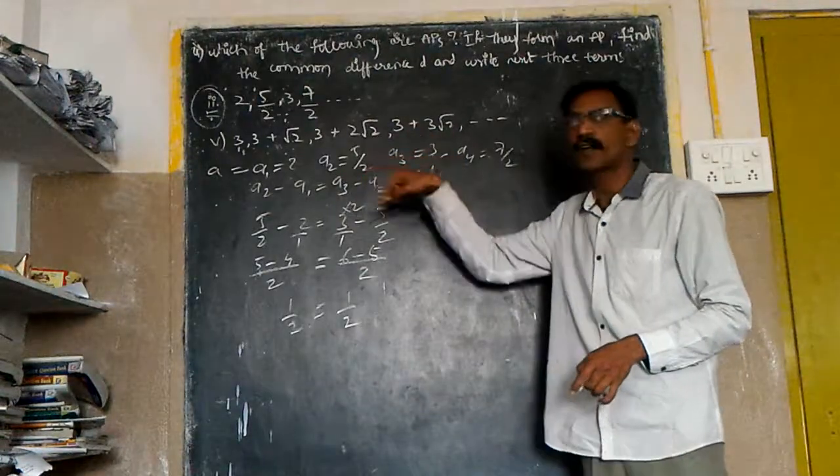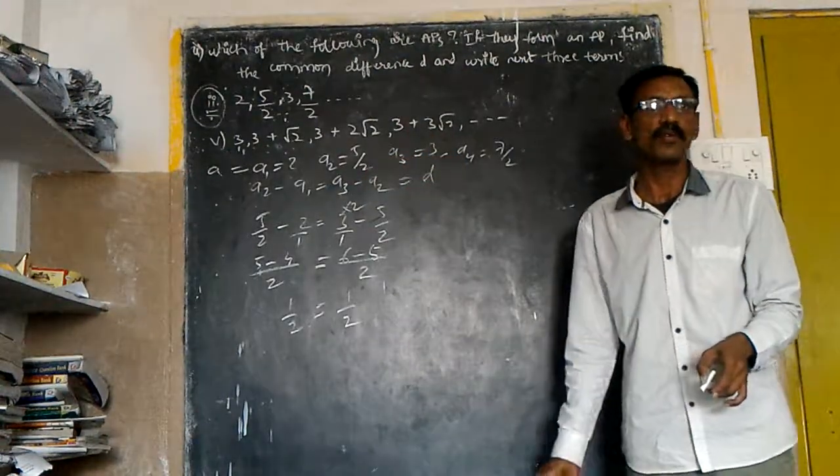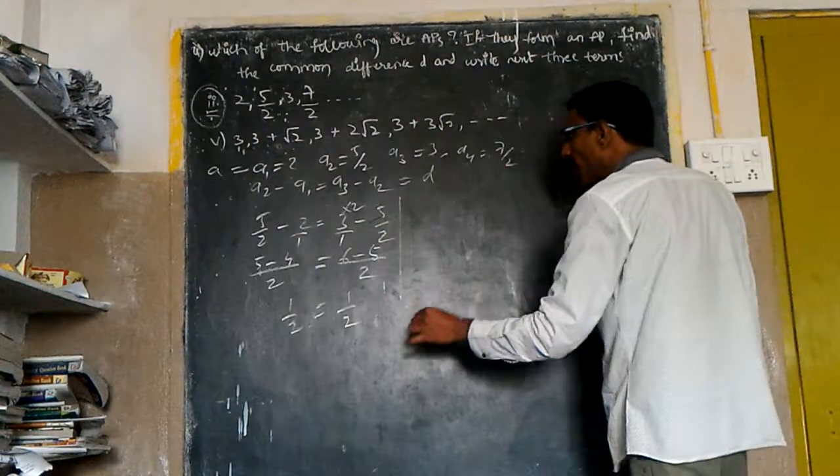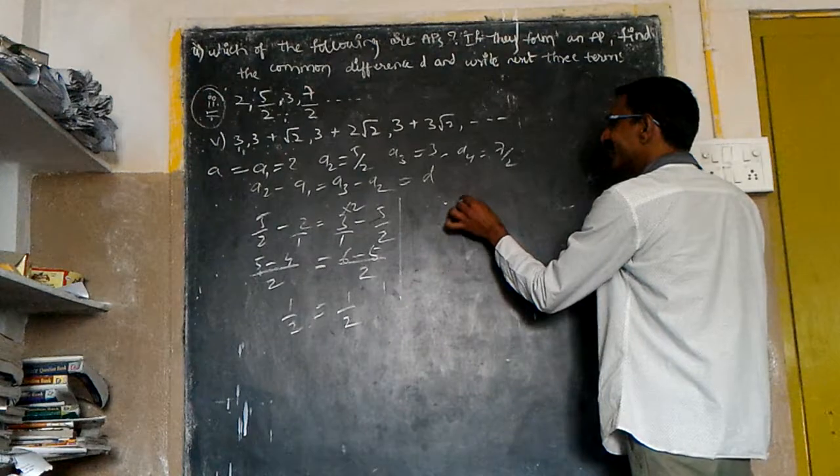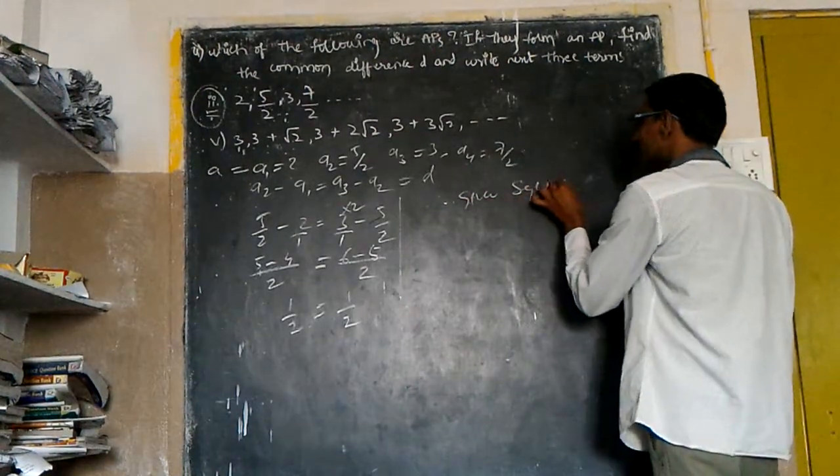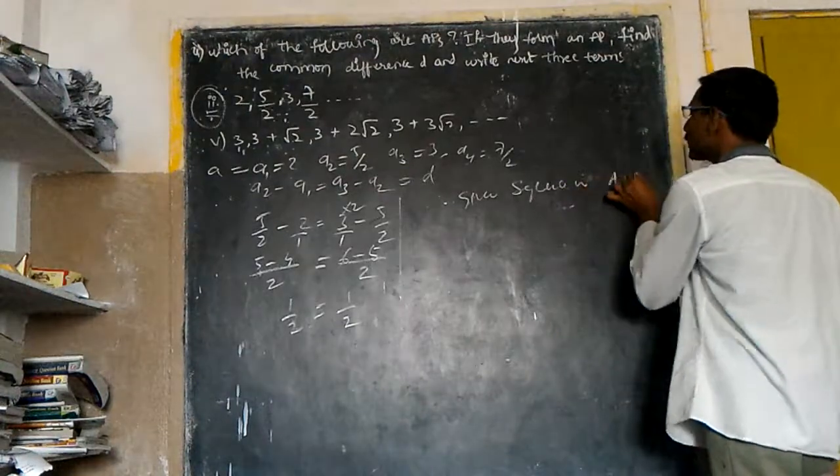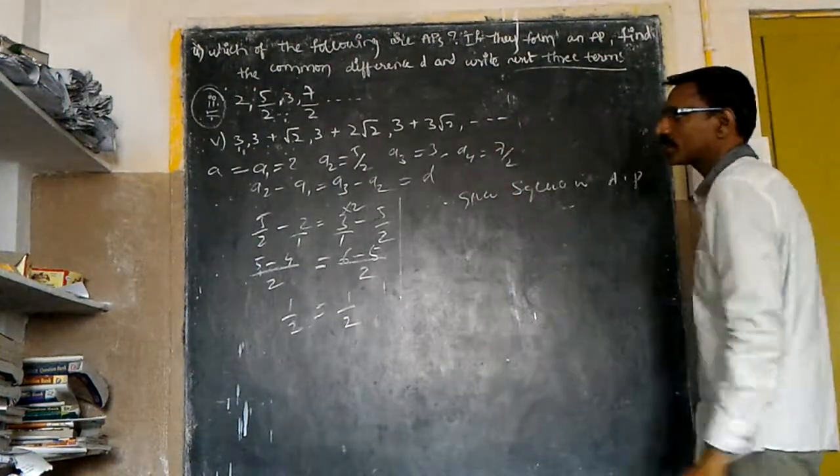After that, you have to find the next three terms. How many terms are given? One, two, three, four. After that, what do you have? The fifth term.